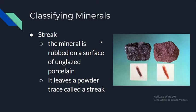The last test is called the streak. You take your mineral and rub it on a porcelain surface; it leaves a powder and you look at the color of that powder — that is the streak. For instance, a purplish mineral might leave a reddish-brown streak, and a dark gray mineral might leave a brown powder streak. Not all minerals will leave a streak; some leave no streak and some leave a very fine white powder.